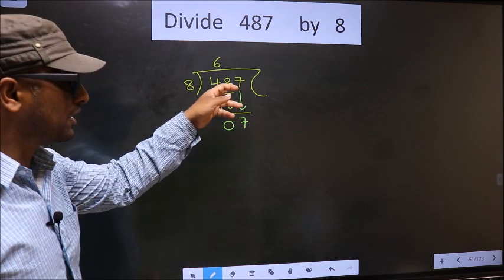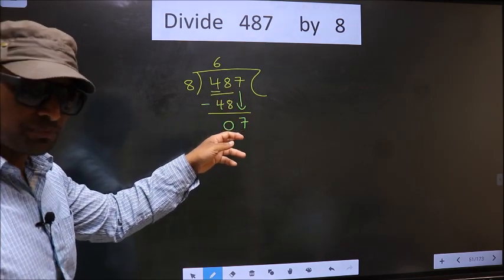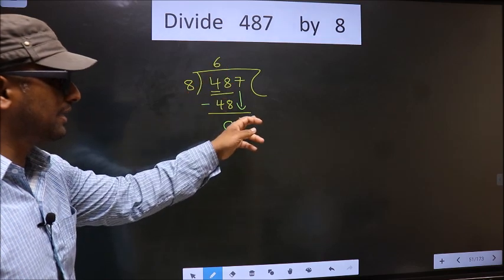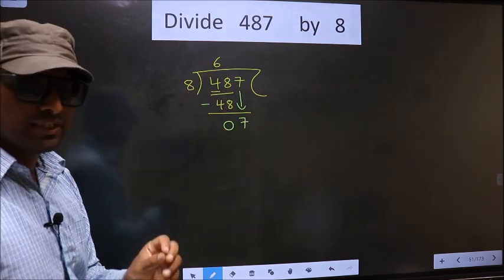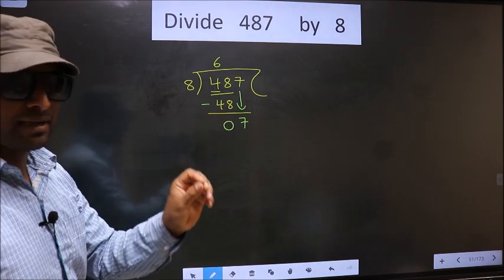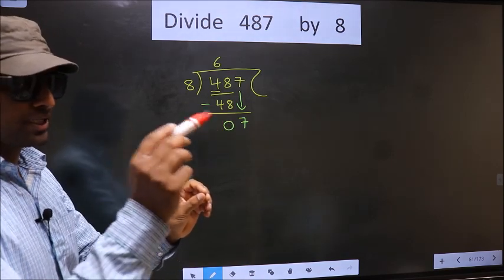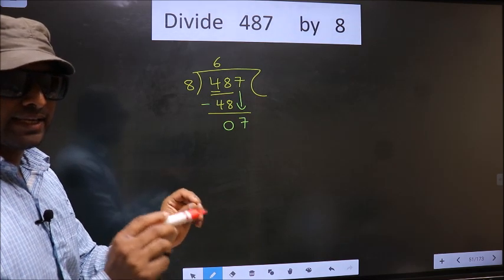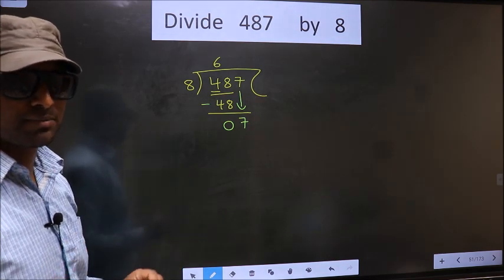Just now you brought the number down. And in the same step, you want to put a dot and take 0 here, which is wrong. I repeat, bringing the number down and putting a dot and taking 0, both at the same step, you are not supposed to do.